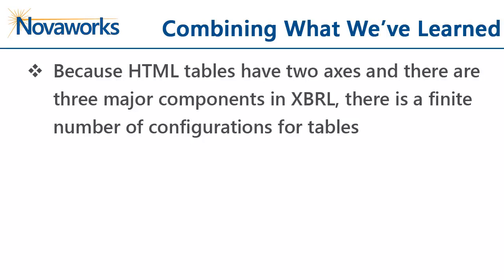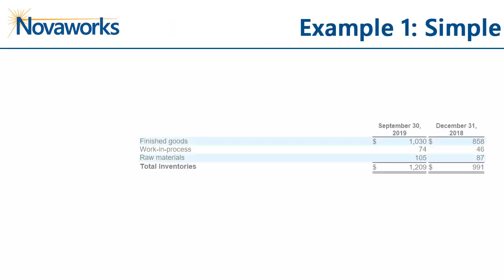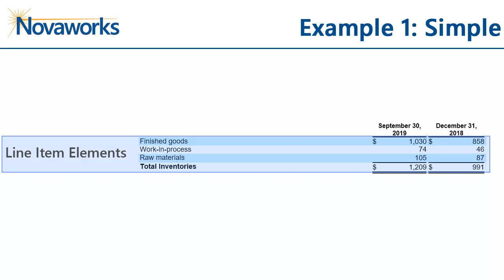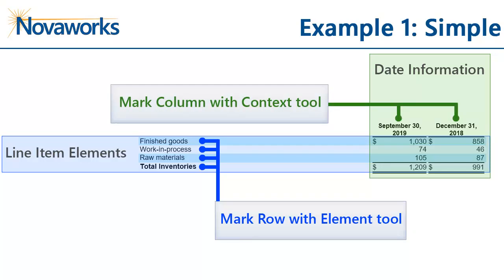Because HTML tables have two axes, and there are only three major components in XBRL presentations, there are a finite number of configurations for the HTML. Here's a simple example — arguably the most common configuration you would see for a table. The rows of this table correspond to line item elements, and the columns of this table correspond to dates or periods of time. Rows that represent line items use the MarkRowWithElement tool, and columns that represent date information use the MarkColumnWithContext tool.